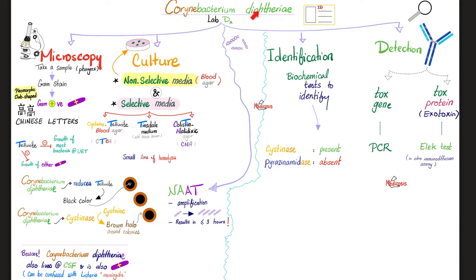Next is the culture. You culture diphtheria on non-selective media and selective media. The non-selective part is blood agar. The selective part has something added — for example, cysteine tellurite added to the blood, called cysteine tellurite blood agar or CTBA. We use tellurite because it inhibits the growth of most bacteria in the upper respiratory tract and other gram-positives, leaving diphtheria alone. Corynebacterium diphtheriae can reduce tellurite, giving black-colored colonies.